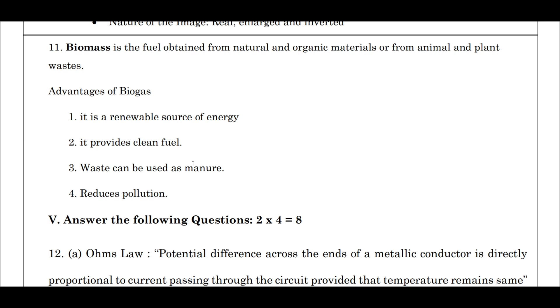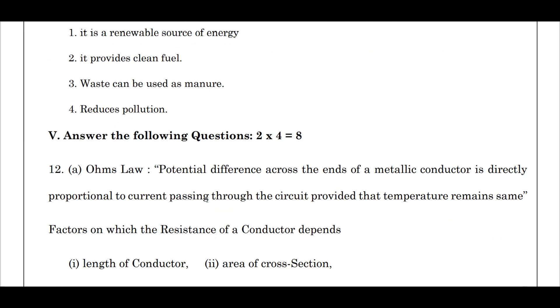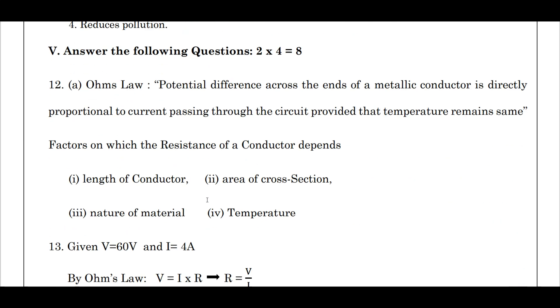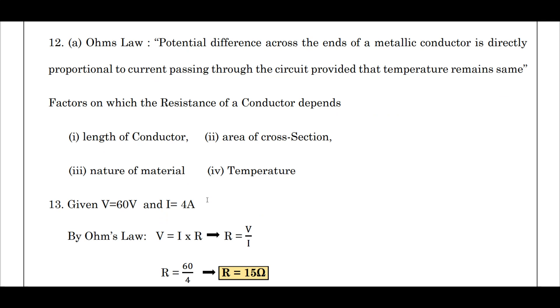Moving to fifth main, four mark question. First question: state Ohm's law. Name the factors on which resistance of a conductor depends on. Potential difference across the ends of a metallic wire is directly proportional to the current flowing through the circuit, provided the temperature remains same. This is Ohm's law. Factors on which resistance of a conductor depends on is the length of the conductor, area of cross section, nature of material, and also its temperature.